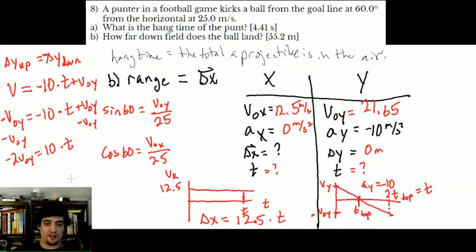I'm going to click on my calculator and finish solving this. I'm going to divide both sides by 10. So I need negative 2 times VOY, which is 21.65, divided by 10. And we find that my T should be... Oop, I dropped a minus. That's negative. There we go.